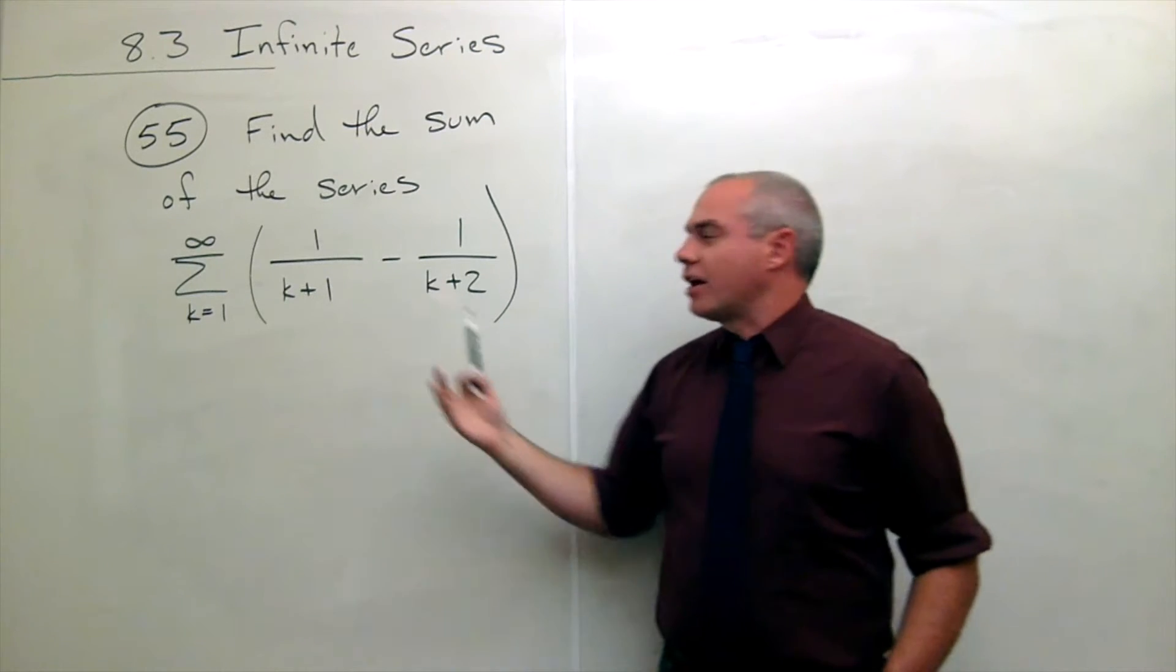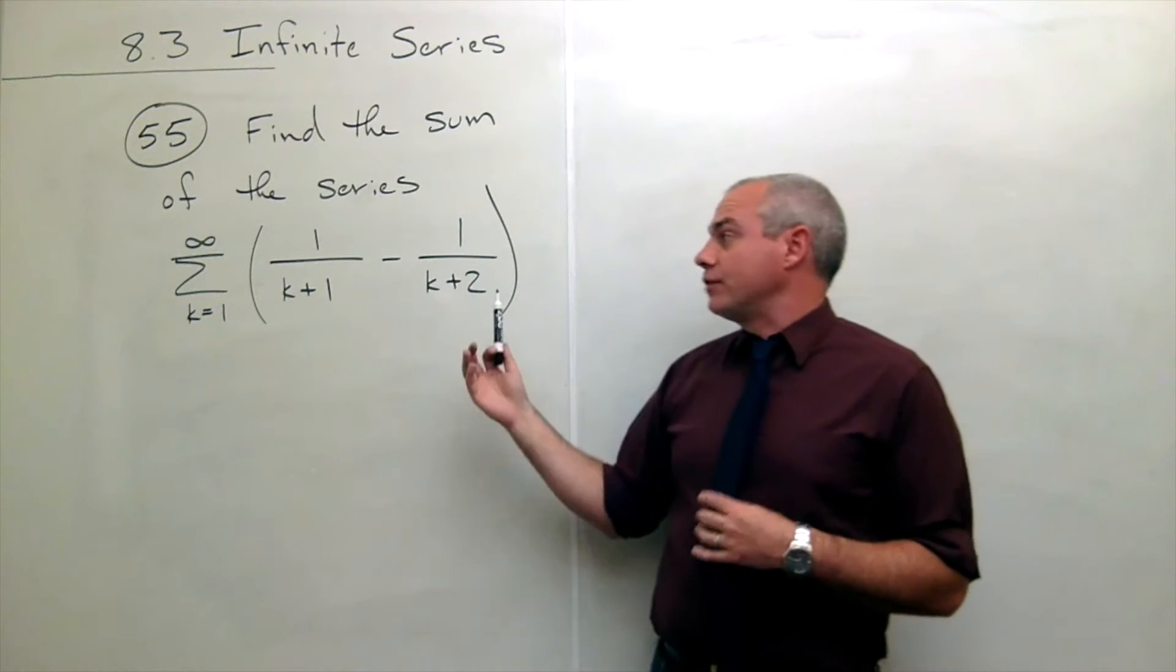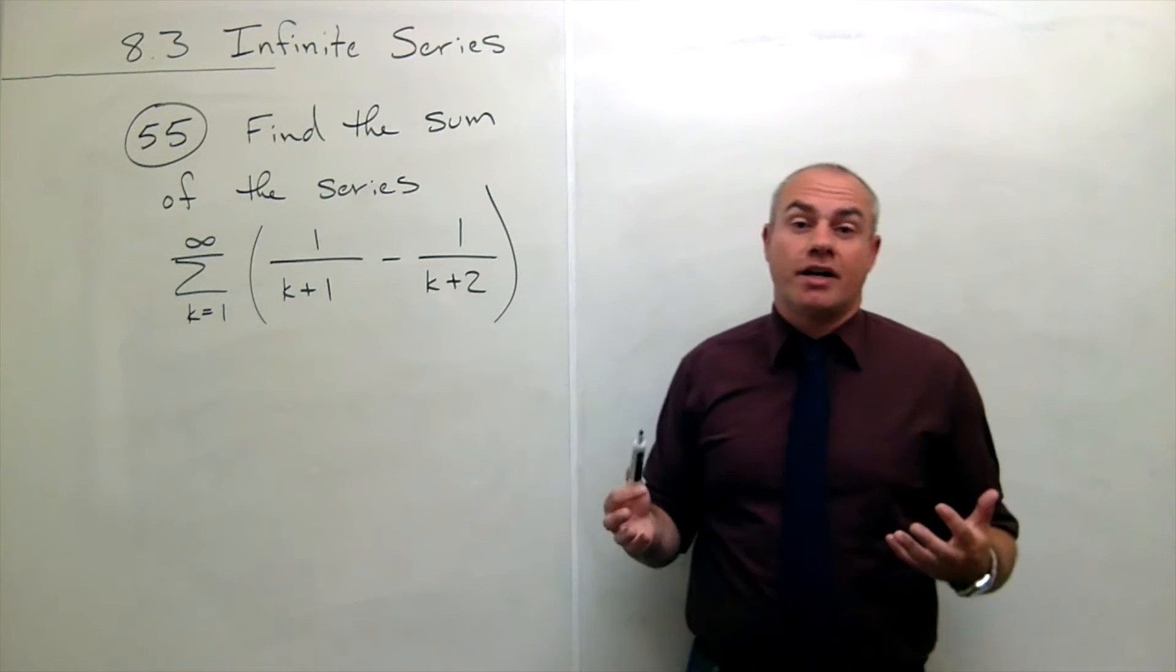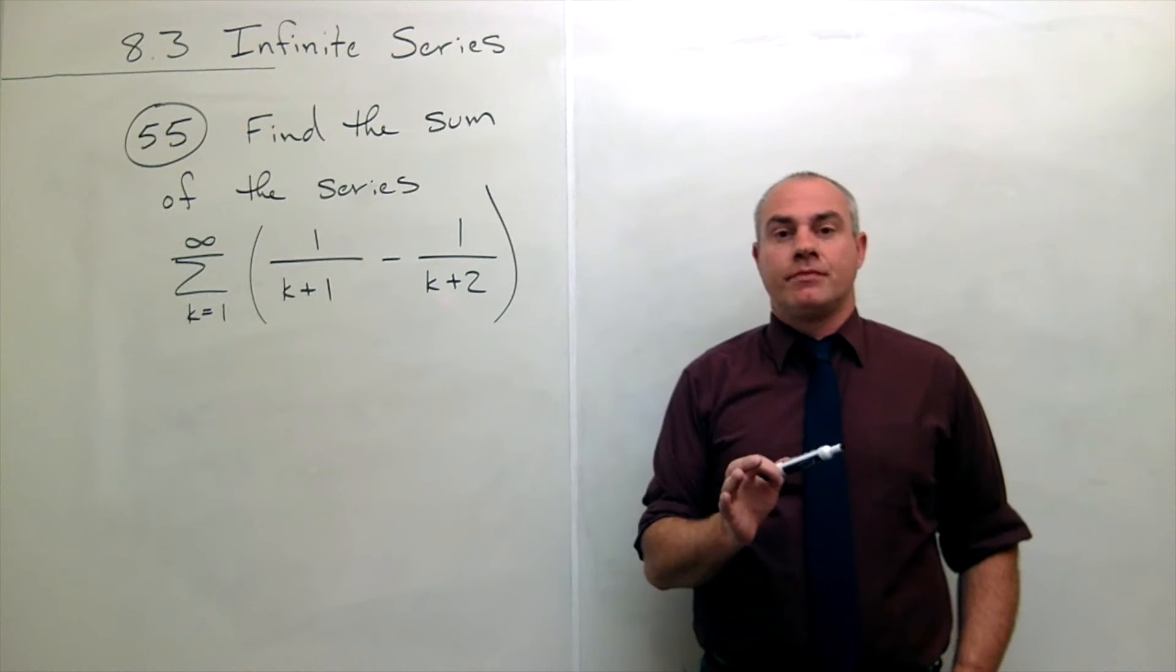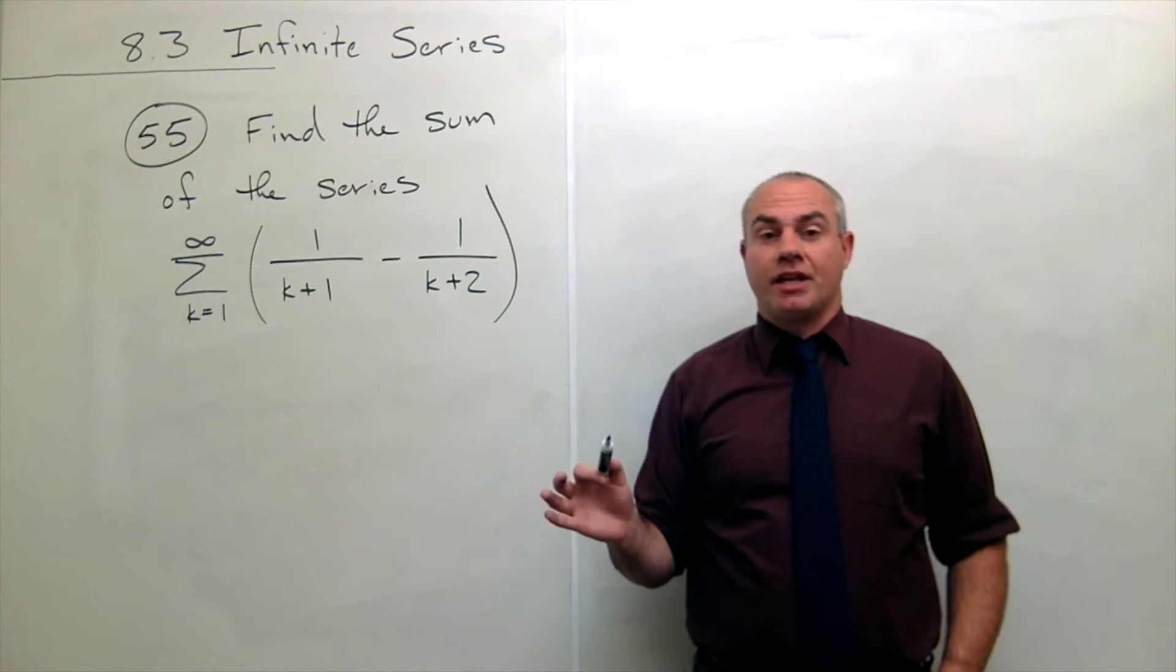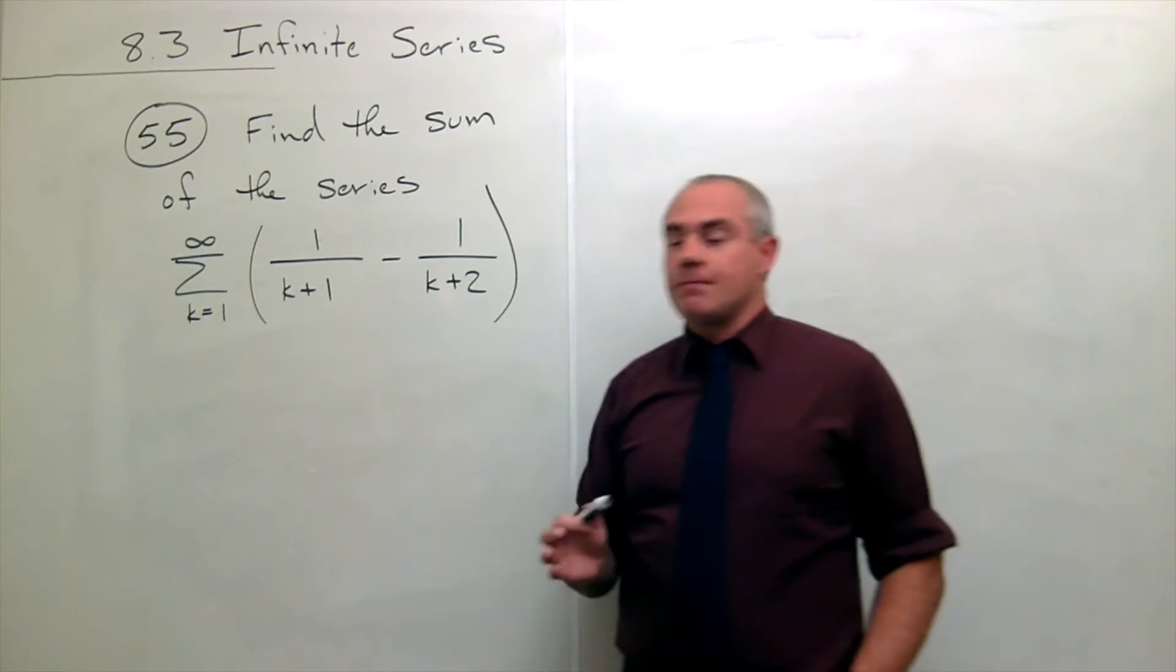We could write out a few terms and see this is not a geometric series. So what I want to do is I want to find the nth partial sum and then take the limit of the nth partial sum as n goes to infinity. So let me show you what I mean by that.